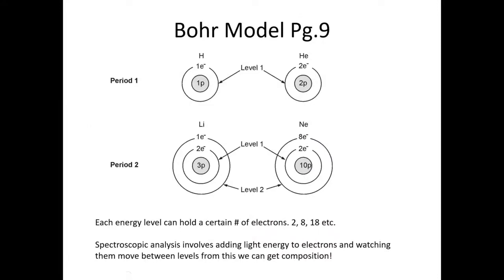Here's the Bohr model you may remember. This shows an element from period one and an element from period two. As you work down the periods in the periodic table - those horizontal rows - you're basically adding an extra ring on the outside: period one has one ring, period two has two rings, period three will have three rings. The first level or first ring can hold up to two electrons. The second ring can hold up to eight electrons. By distributing electrons in here, we can determine how reactive an element would be and what type of element it would be.